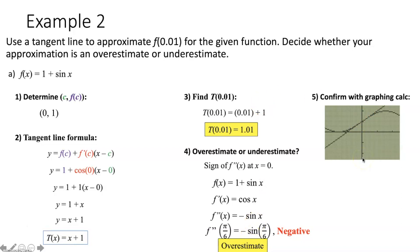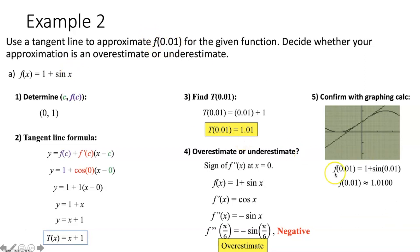And for good measure, plugging 0.01 into the original function in the calculator gives approximately 1.01, which is almost identical to our tangent line approximation.